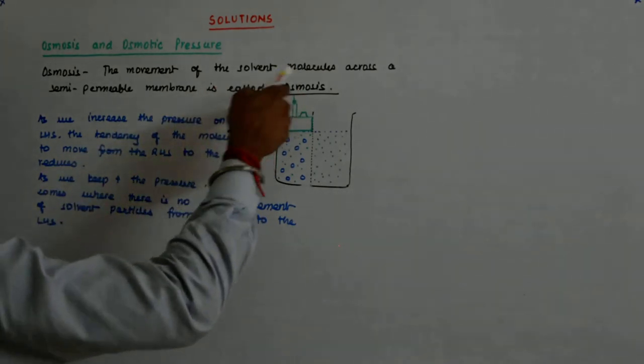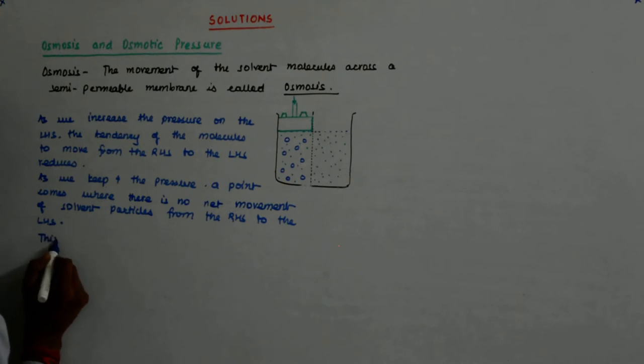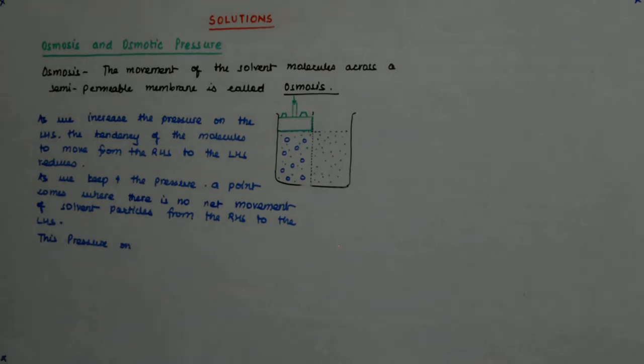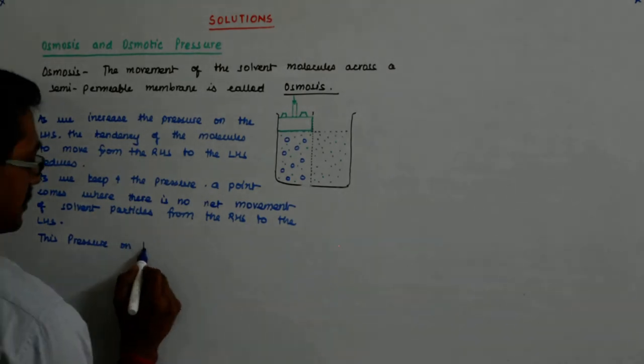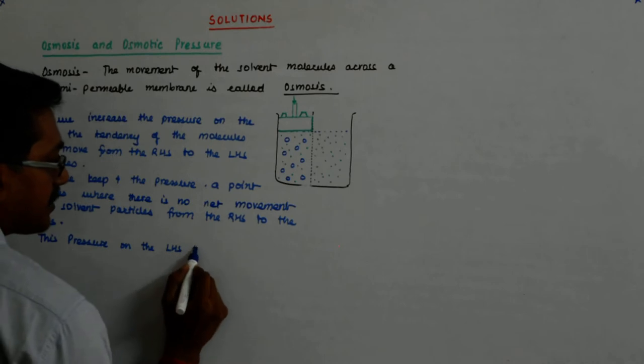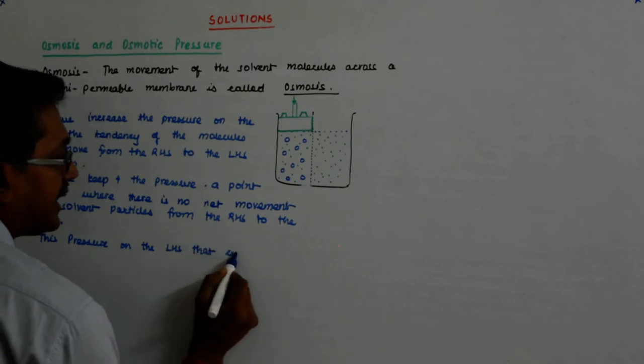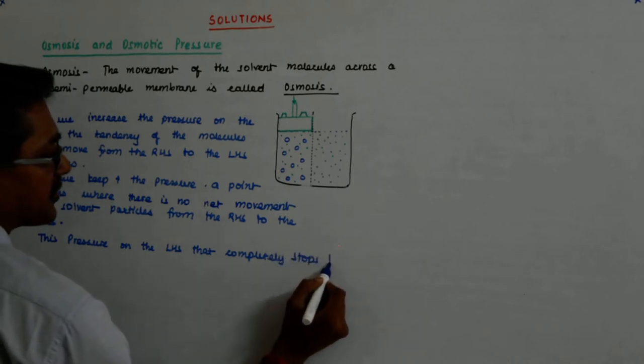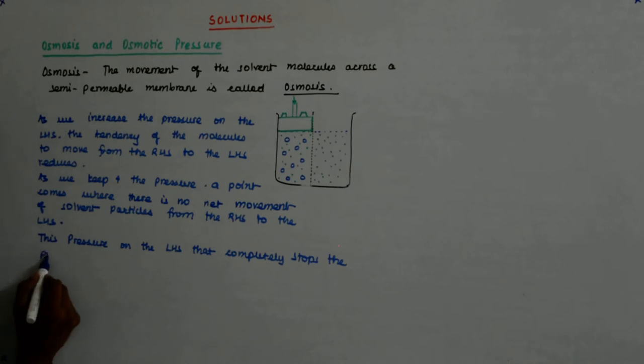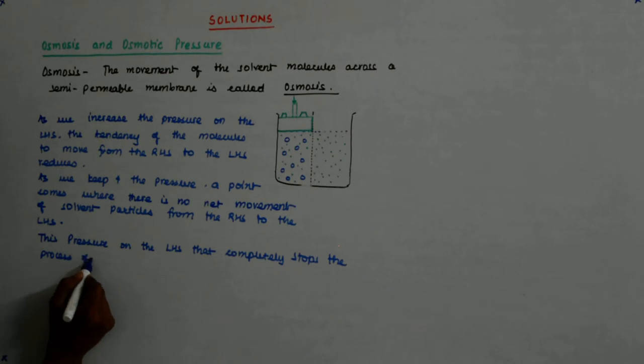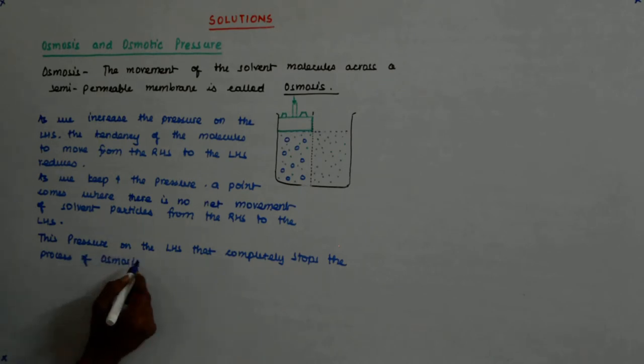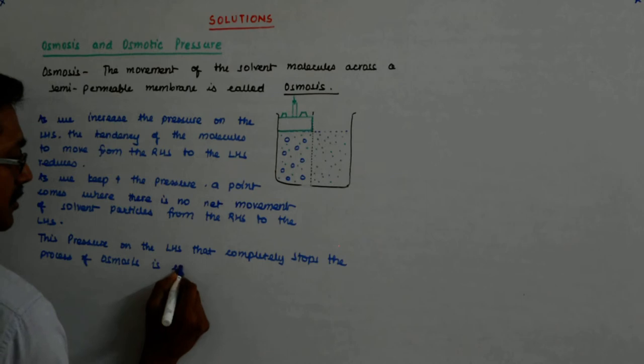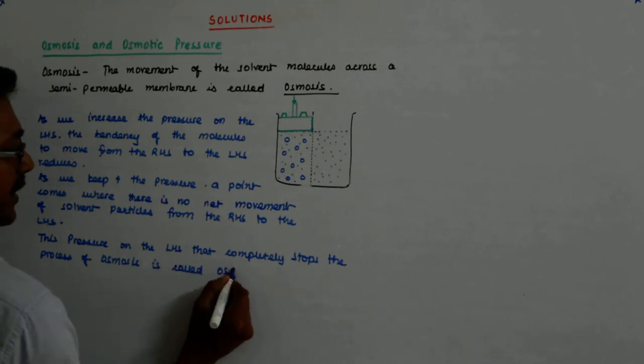Now, this pressure on the left hand side that completely stops the process of osmosis is called osmotic pressure.